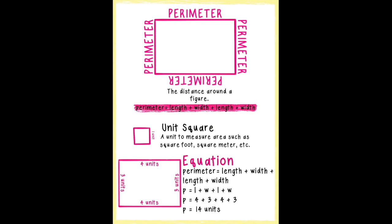The formula or equation for perimeter is: perimeter equals length plus width plus length plus width.